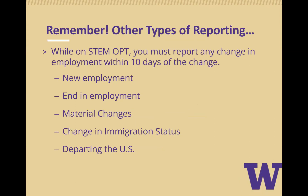Remember, there are other types of reporting when you are on STEM OPT Extension. You must report any change in employment within 10 days of the change. You may report new employment and you will need to provide a new Form I-983. You may report ending employment and you will need to provide the final evaluation, page 5 of your I-983. Any material changes to your I-983 training plan, a change in your immigration status, or ending STEM OPT Extension early and departing the U.S. requires you to submit a request in your MyISS.